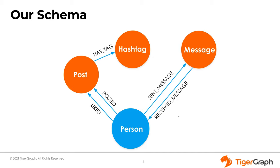Next we have the post, which is a post a user has made on the social media platform. The post will contain the content of the post, the hashtags it contains, and the date it was created. Then we have hashtag nodes - each one is a unique hashtag tied to posts. Finally, we have messages between two users, which contain a subject, a body line, and a sent and received datetime.